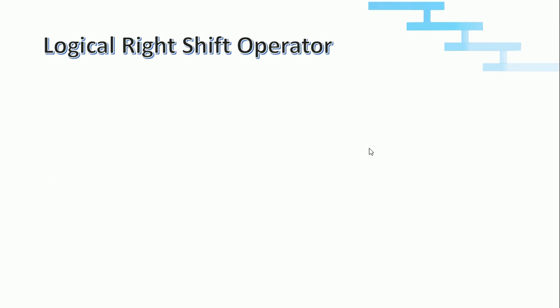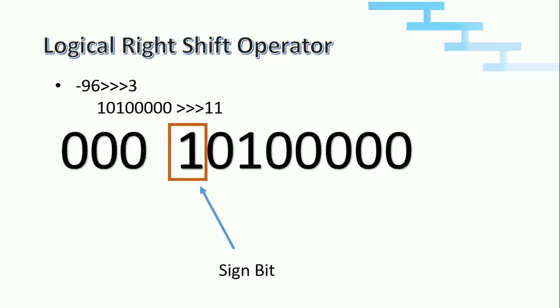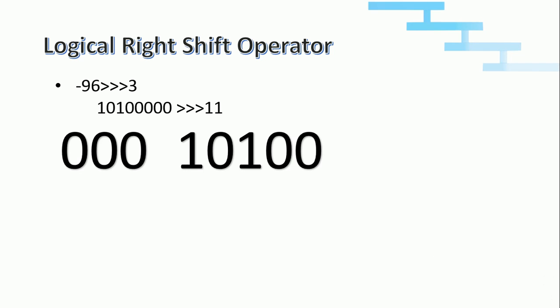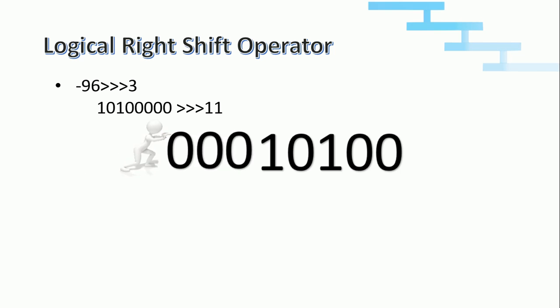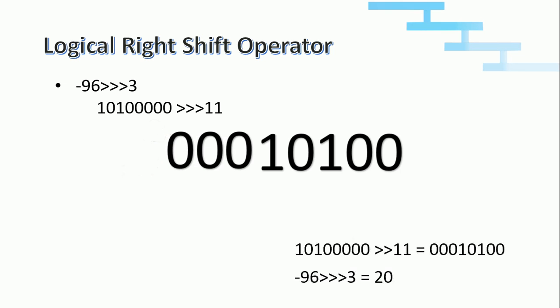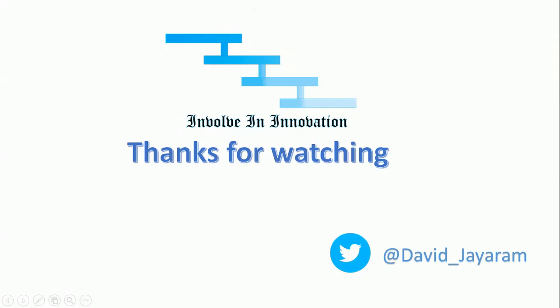Now we will see about logical right shift. Logical right shift is not present in all languages — it is present in Java. Logical right shift is similar to left shift in that irrespective of the sign bit we add 0. So for minus 96 logical right-shifted by 3 positions, we add three 0s on the left irrespective of the sign bit and remove 3 bits from the right. We got the output 20. Thanks for watching this video.